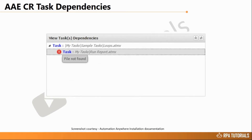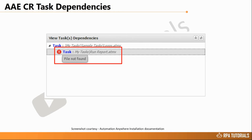Task can be deployed only after inputting the password. In case any dependency of your task is not met, it will show up as a red exclamation icon. Resolve this by placing the dependency in the location where it is supposed to be. All dependencies must be resolved before you deploy your task from the control room on the bot runner.